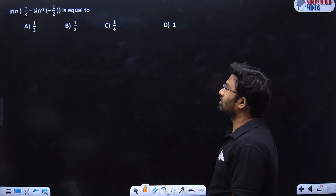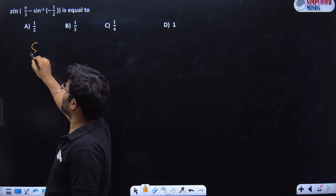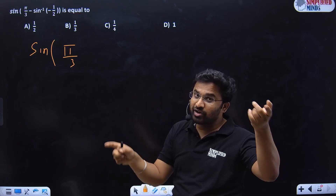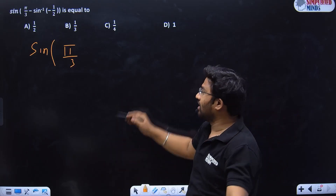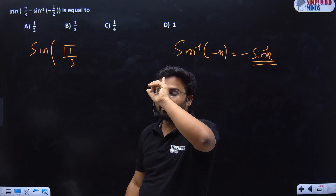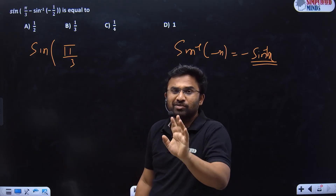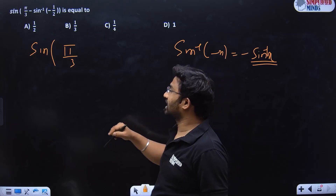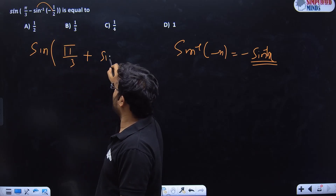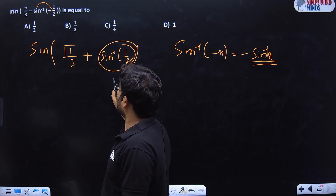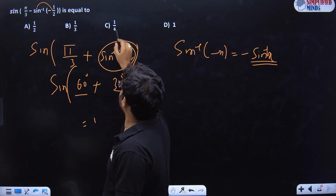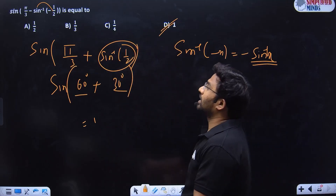MCQ: sin(sin⁻¹(π/3) + ...) or sin⁻¹(sin(π − π/3)). Note: π − π/3 is not in the range [−π/2, π/2] of sin⁻¹. But sin(π − π/3) = sin(π/3). So sin⁻¹(sin(π/3)) = π/3. Then combining: 60° + 30° = 90°. sin 90° = 1. The answer is 1. Also using the odd function property: sin⁻¹(−x) = −sin⁻¹(x).